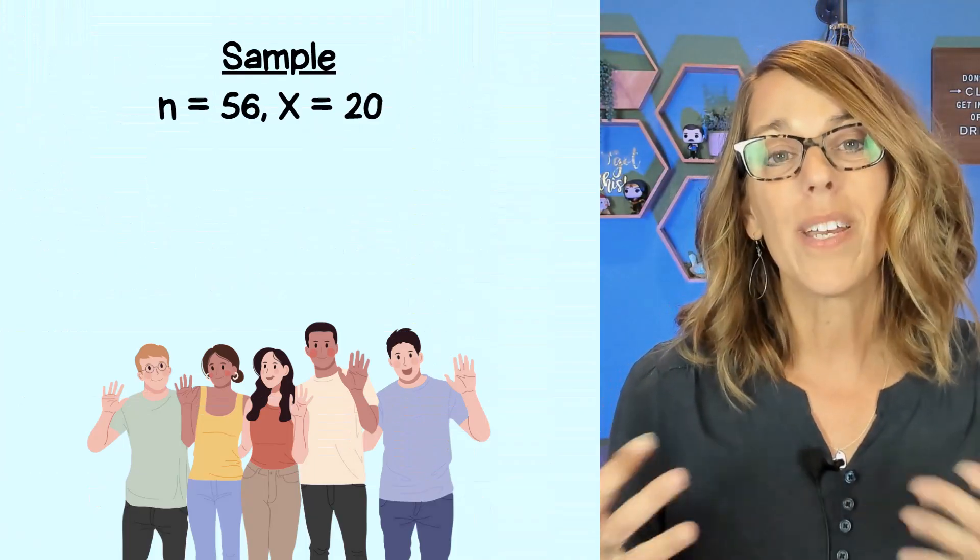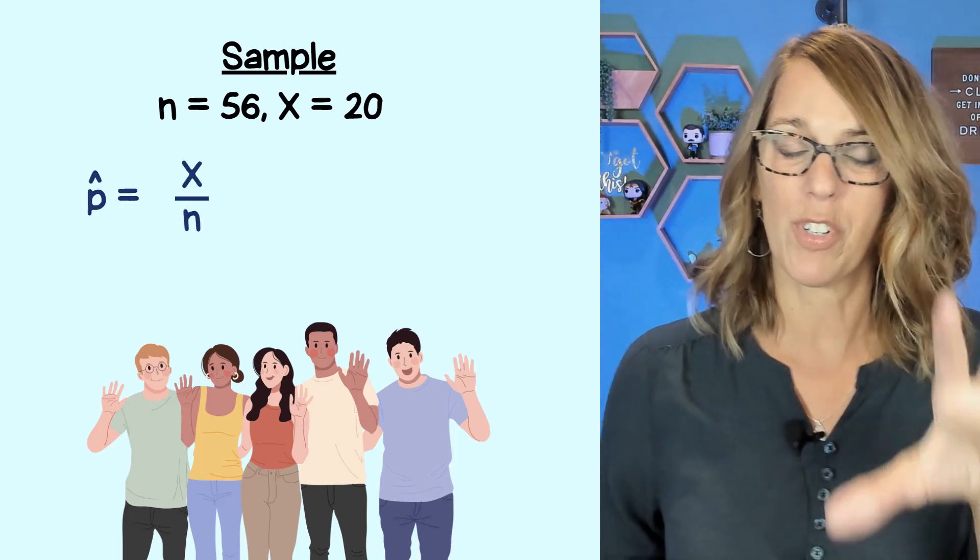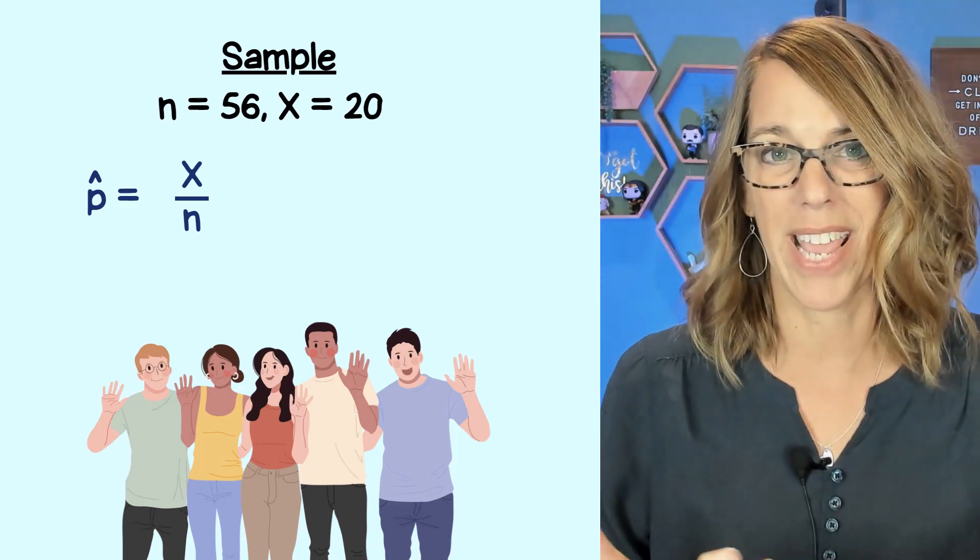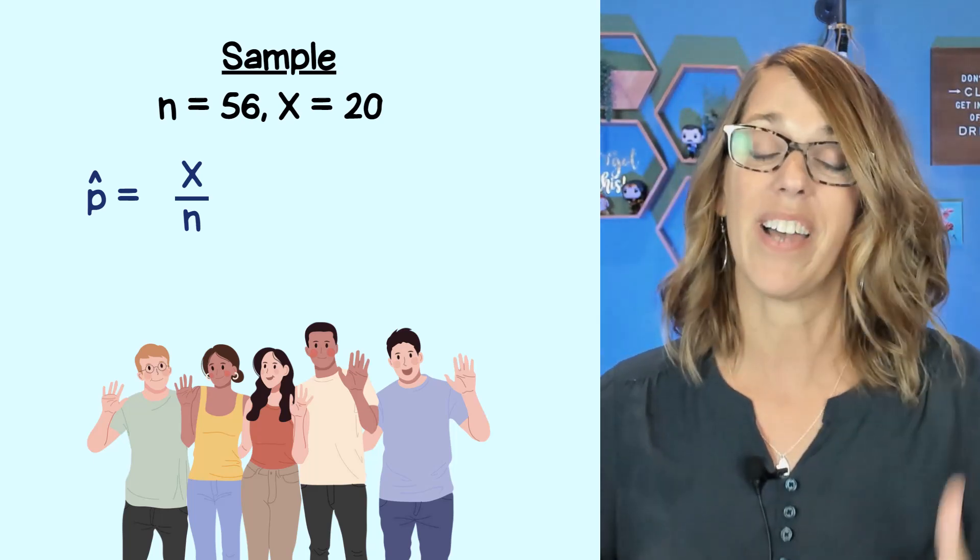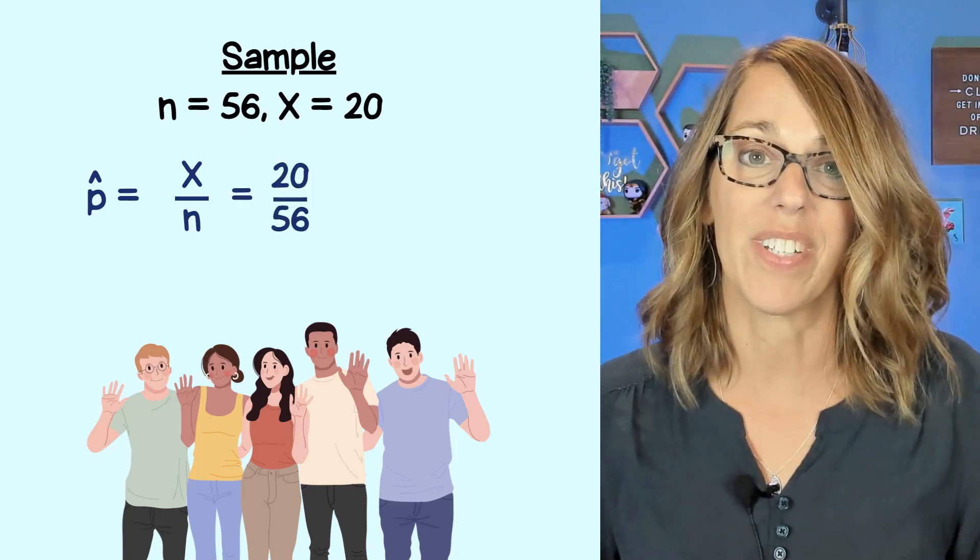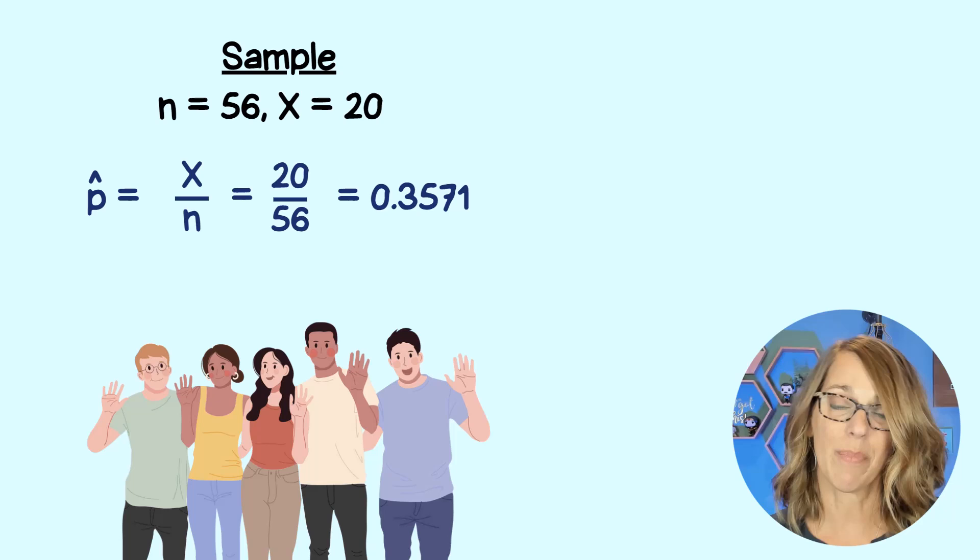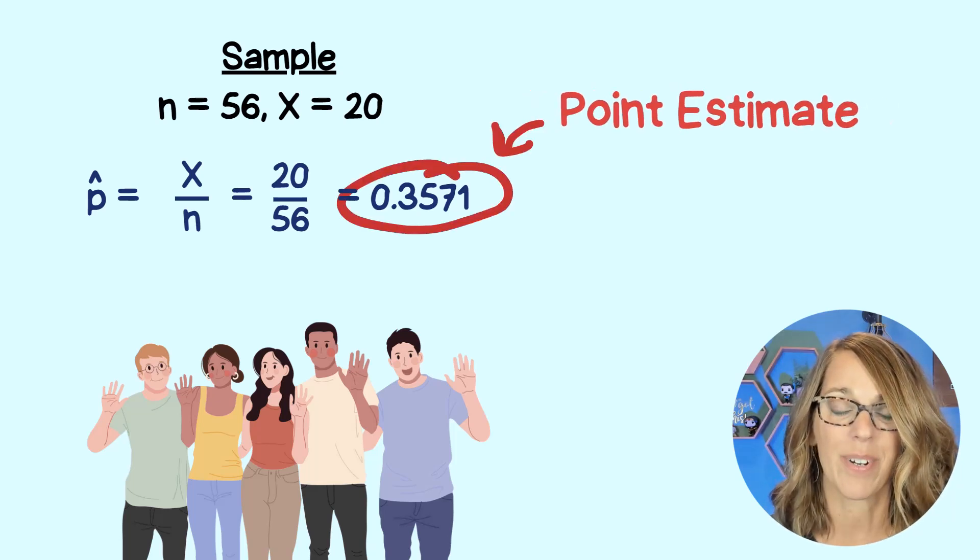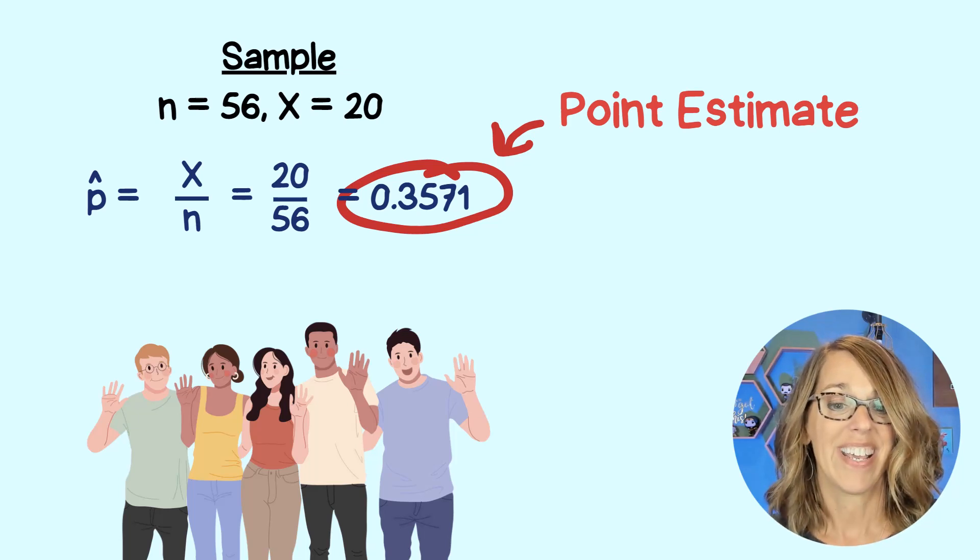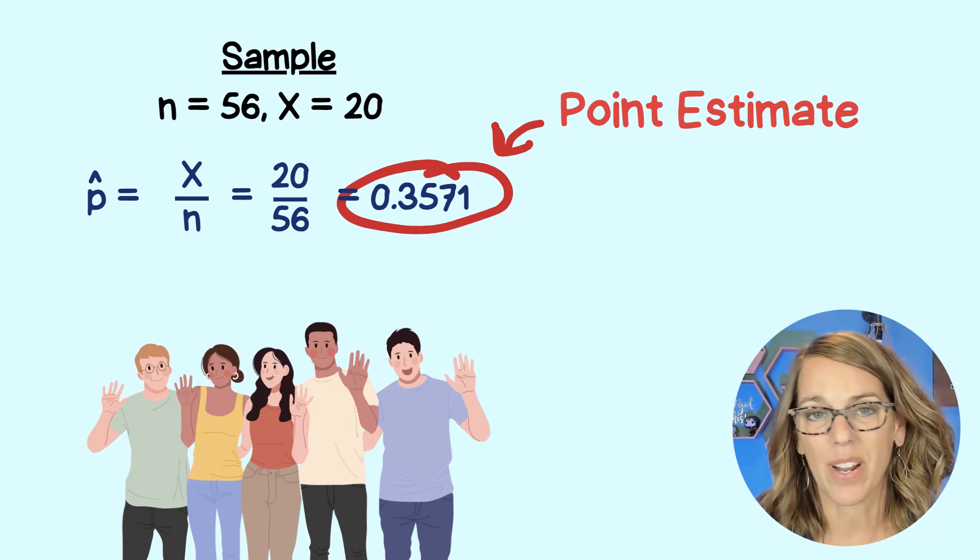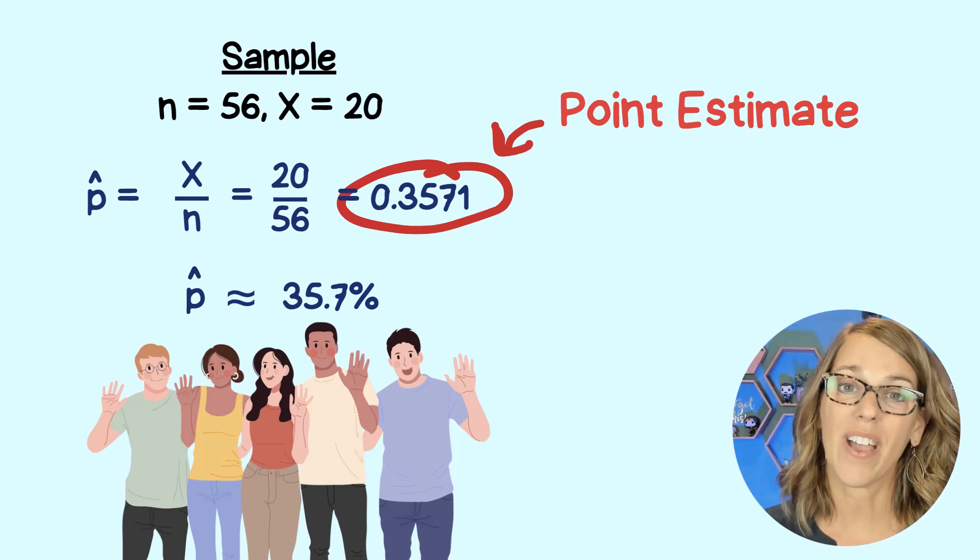From this information, we can put together this sample proportion. We call that sample proportion P hat and it sounds kind of complicated but it's actually just a fraction. It's favorable, so it's the TikTok people out of the total, 20 out of 56. Write that as a decimal 0.3571 and this decimal is going to become our point estimate. We're going to use this to estimate the population proportion and we can also say for our sample that P hat is 35.7%.